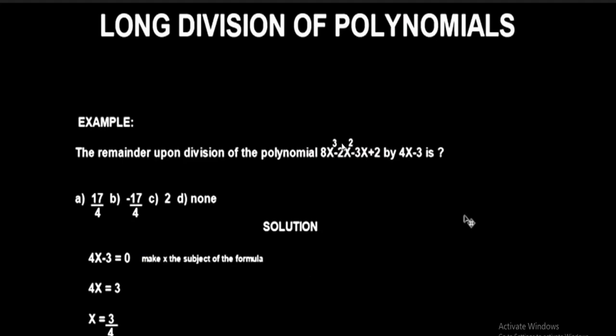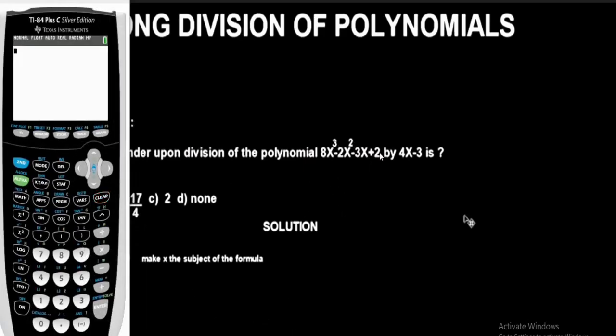Let's input this polynomial which is the dividend of the polynomial. We have this cubic polynomial. We have 8x³, so to bring that cube, make use of this power function or button. We have minus 2x², then we have minus 3x, plus 2.